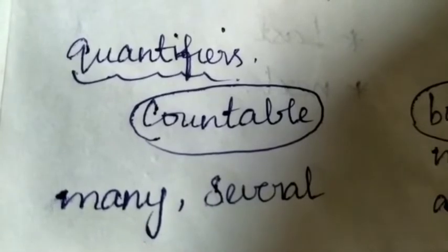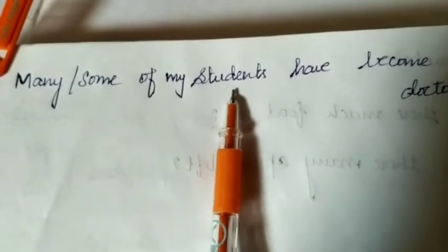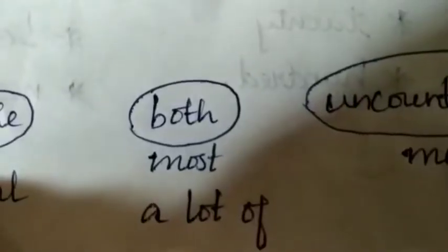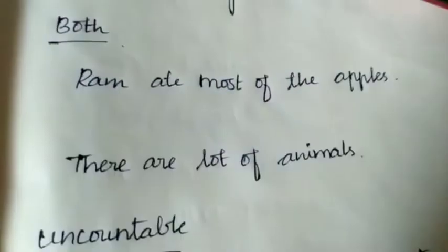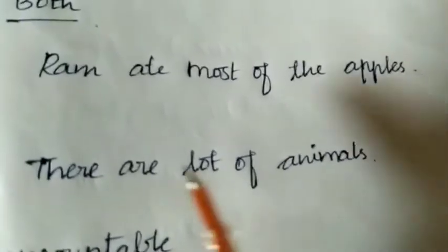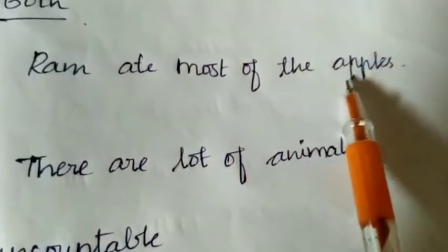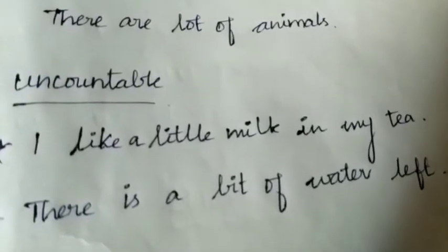Examples for quantifiers with countable nouns — keywords: many and several. For example: 'Many of my students have become doctors.' For 'most' and 'a lot of': 'Ram ate most of the apples' — countable. 'There are a lot of animals' — also works for countable. These illustrate quantifiers with countable nouns.